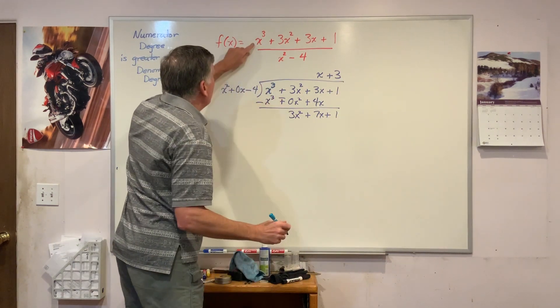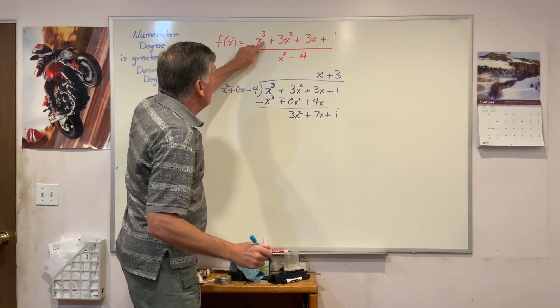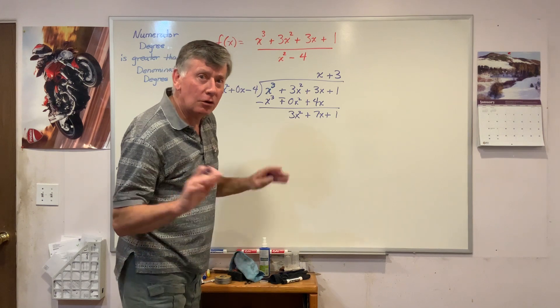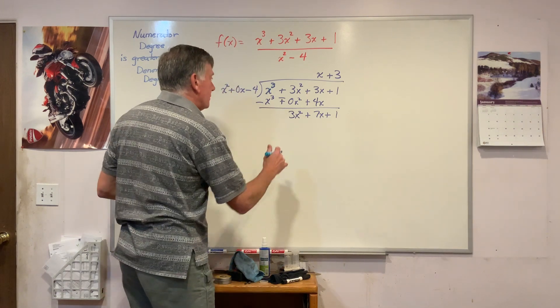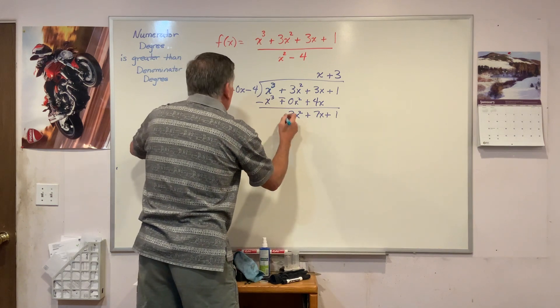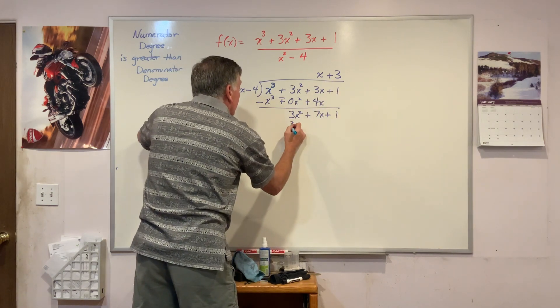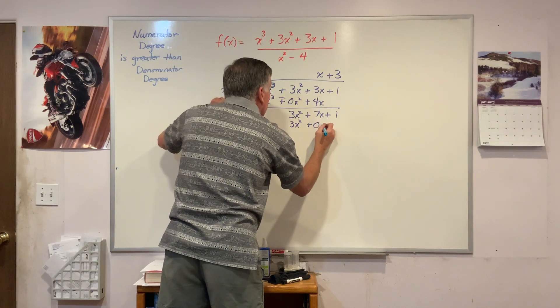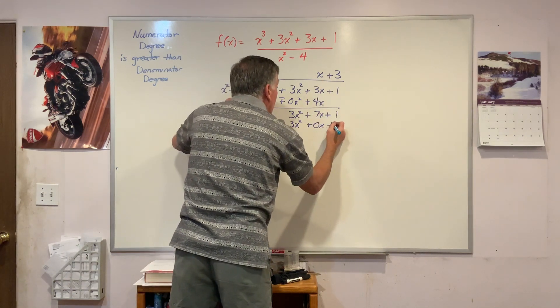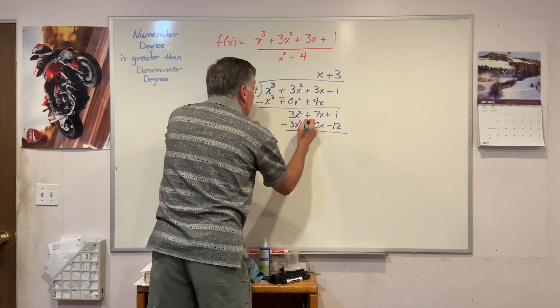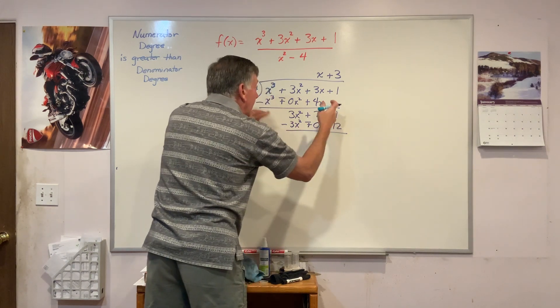And sure enough, if I look at this, x plus 3 shows up in that numerator. You'll get accustomed to this. I'm going to go ahead and finish my division. 3 times x squared plus 0x. 3 times the minus 4 is minus 12. Draw my line, change the signs, and add.